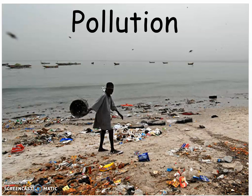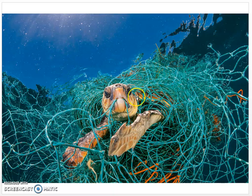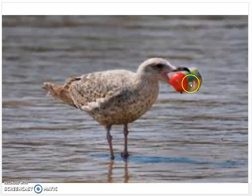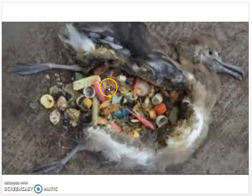Here you can see a couple of pictures of how pollution affects marine life. In one image, a turtle is caught in a net. In another, a bird has some type of bottle that it will probably try to ingest. The next picture shows a cross section of a deceased bird — it died because it ate a lot of the trash and garbage that was in the ocean ecosystem.